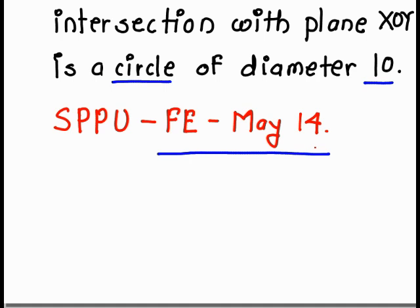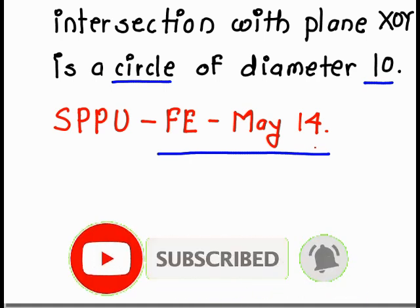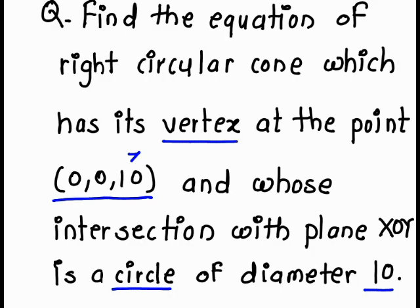First of all, try to understand the problem. What are we given? How do we find the basic required things: the coordinates of the vertex, the direction ratios (DRS) of the axis, and the semi-vertical angle? The vertex is given as (0, 0, 10), which means it is on the Z axis.